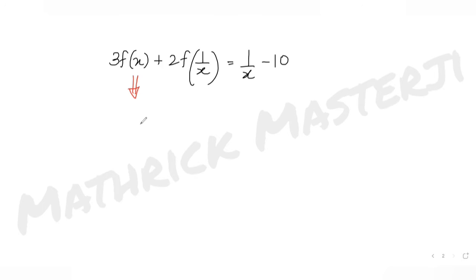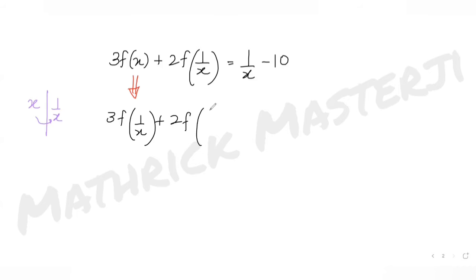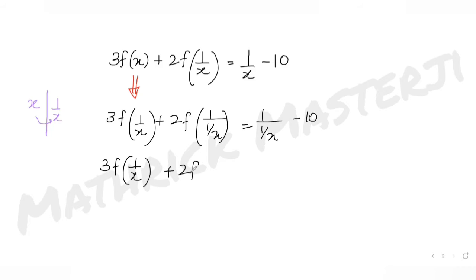Substituting x → 1/x: 3f(1/x) + 2f(1/(1/x)) = 1/(1/x) - 10, which simplifies to 3f(1/x) + 2f(x) = x - 10. This is our second equation.